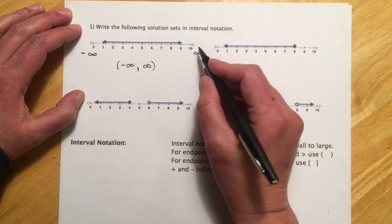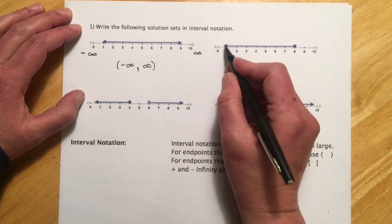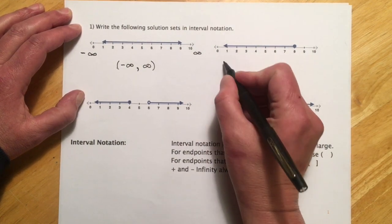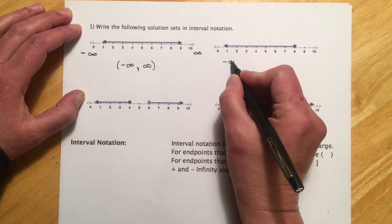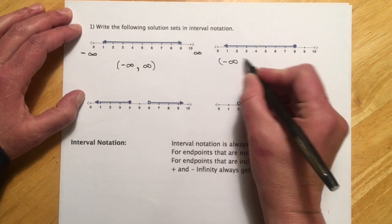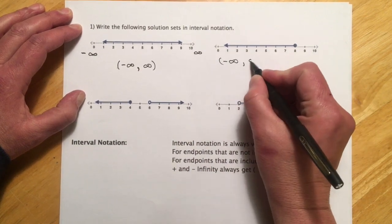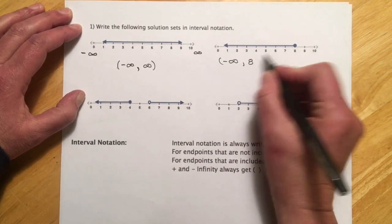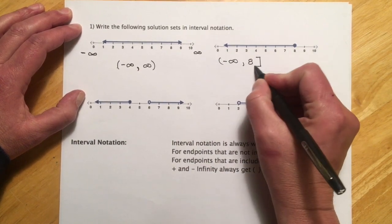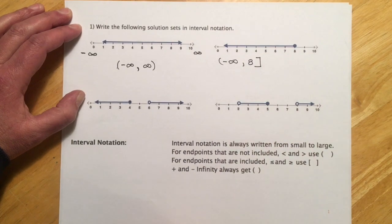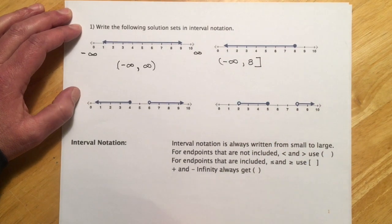So this next one, we're going from negative infinity as our farthest point to the left, and that's going up to this 8, and we're including the 8, so we will use a bracket there.